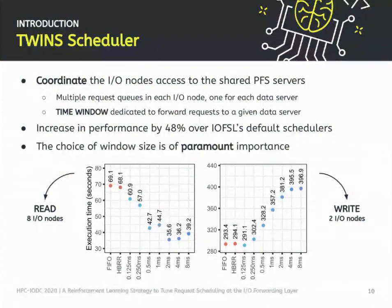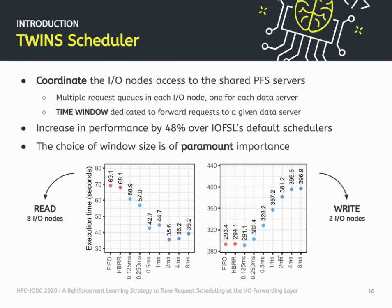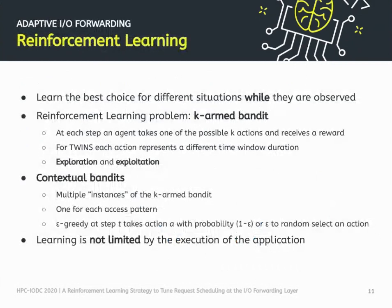What's relevant here is that the choice of window size for TWINS is of paramount importance and depends on the access pattern. We have two situations with different patterns and system configurations — one for reads and one for writes with different numbers of IO nodes. On the X axis we have different TWINS window sizes, and you can see that the best window is not always the same for different patterns. There doesn't seem to be a general rule across all experiments, so we want to learn the best choice for these different access patterns while they are being observed.